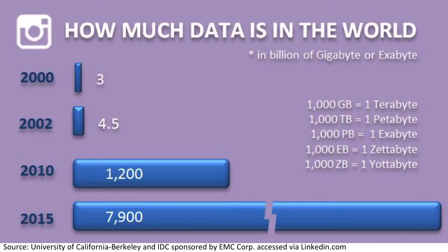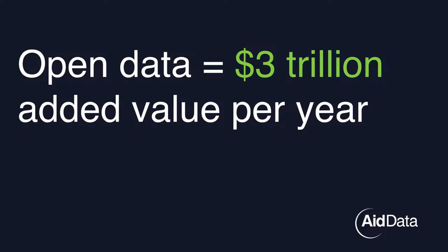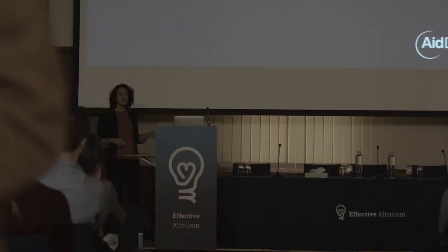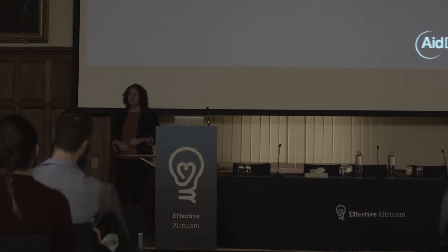And to do any of this requires information, and lots of it. The good news is we're living in the information age — we have access to more data than ever before, and the supply of digital information is growing rapidly. The McKinsey Global Institute estimates that open data could provide added value of $3 trillion per year in just seven sectors of the global economy, enough to fully fund the SDGs.